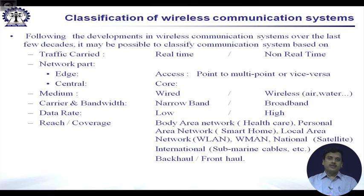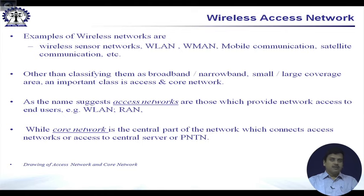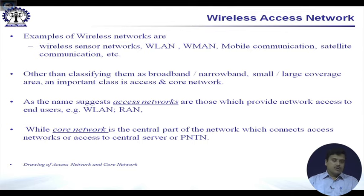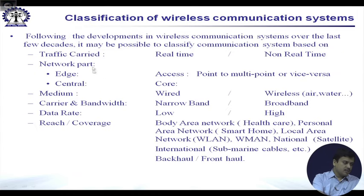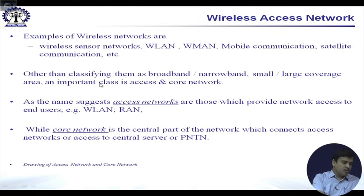There could also be classification on whether a particular link is a backhaul or a fronthaul. Looking at typical examples of networks — sensor networks, WLAN, WMAN, mobile communications, and satellite networks — one of the most important ways to classify them is by the edge versus the central part of the network.